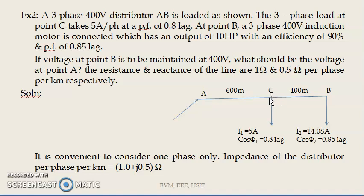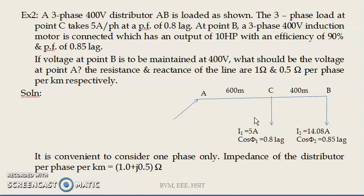The load connected at point C is 5 amps per phase, lagging at a power factor of 0.8. For convenience, we shall consider this three phase distributor as a single phase distributor. We will calculate the single phase voltage at the sending end and then convert it into three phase voltage. So we apply all the procedure to calculate the sending end voltage for a single phase, and then convert it into three phase.